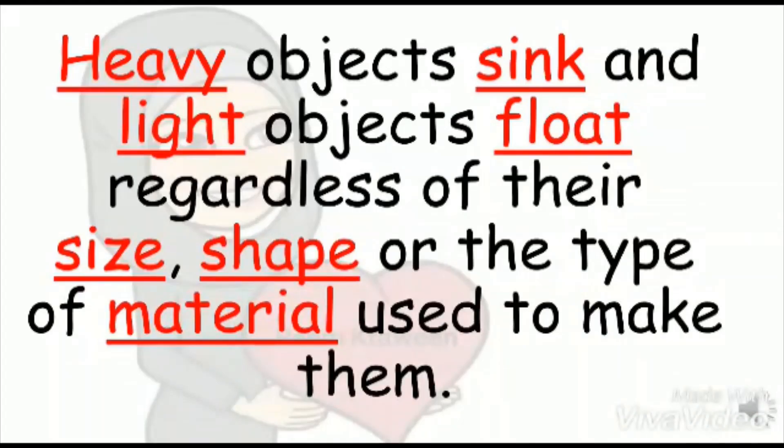An orange with a peel is heavier than an orange without a peel. But if we don't peel the orange, it floats because it has air on it. But if we peel it, it sinks.